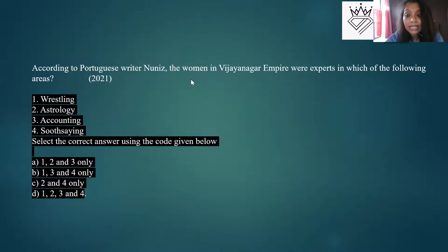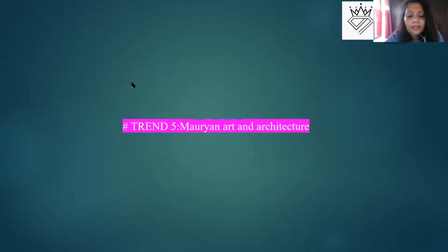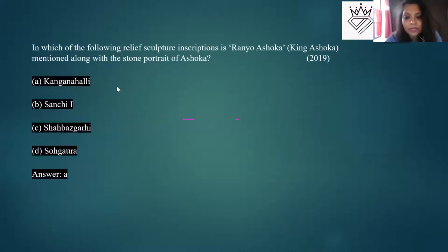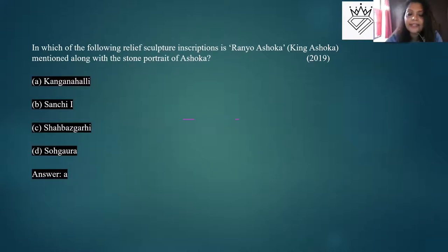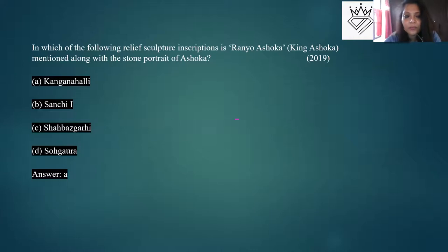The basic book of reference is always NCERT 6 to 12. UPSC builds on that, so take basic information and Google to supplement it. Spend maximum 10-15 minutes per traveler — don't download research papers. The Vijayanagara period is very important for travelers. From this trend, don't break your head over insignificant travelers.